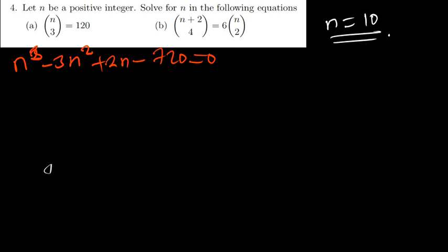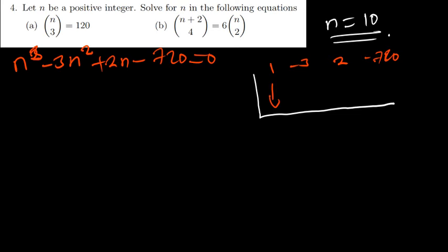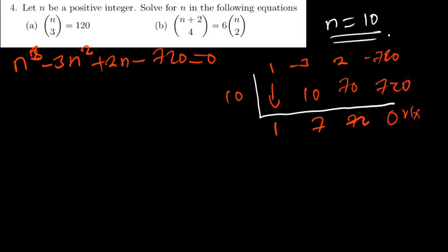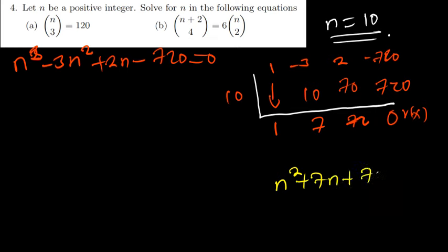Now that I have found n to be equal to 10, since it's a polynomial I go to synthetic division to find other values of n. I know that n is positive in this case, so that's my first answer. I'll use synthetic division. I'll have 1, negative 3, 2, negative 720. I bring this 1 down, so 10 has to be here. 1 times 10 is 10. If I add, I get negative 3 plus 10 which is 7, so that gives me 70. If I add, 72. If I multiply, it gives me 720. And indeed, the remainder is 0. That proved that 10 is indeed a factor. So I have now n squared plus 7n plus 72 is equal to 0.